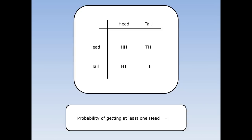What's the probability of getting at least one head? Well there are three places this happens. I could get two heads, a tail and a head, or a head and a tail. And there are four things that could happen altogether. So the chance of getting at least one head is three out of four.